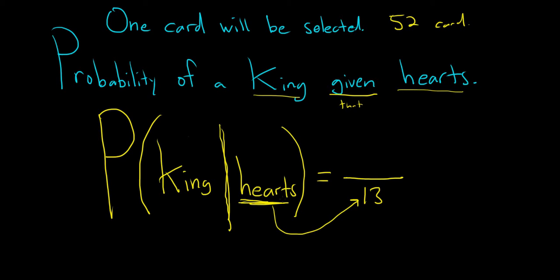Normally in these card problems, you have 52, because you have 52 cards in a deck. But here, we're being told, we're given that it's a hearts card. So that reduces our sample size from 52 to 13. So now we only have 13 total possibilities.